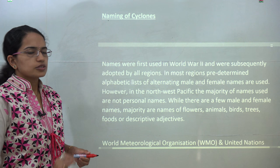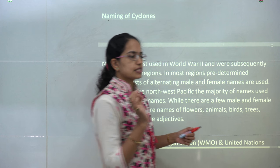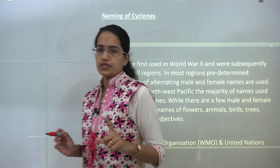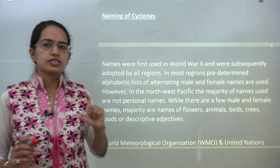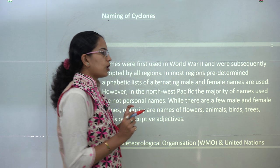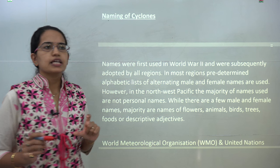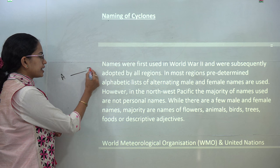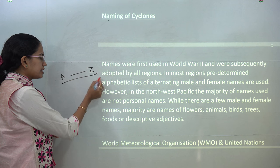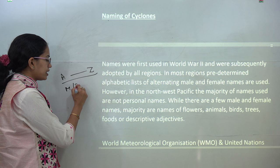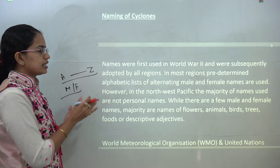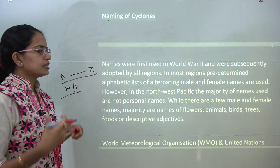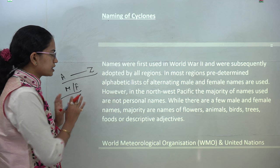The naming of cyclones is an interesting phenomenon. In the Pacific Ocean, naming is done in alphabetical order from A to Z, with alternating male and female names. Initially these were names of persons; later flowers, animals, trees, and birds were included. Naming started after World War II, and nearly all regions across the world now have a naming system.